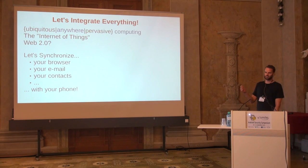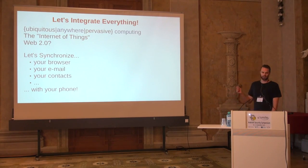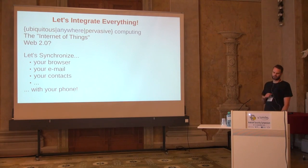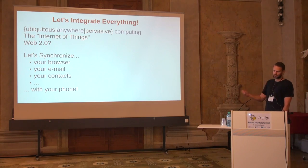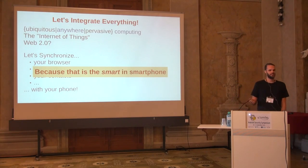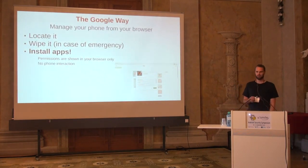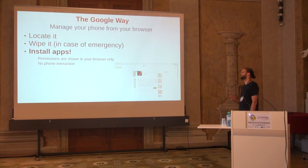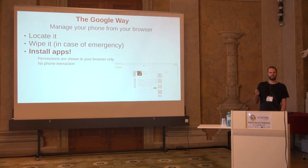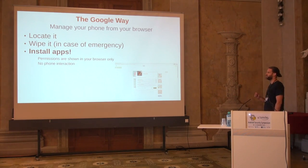So how did Google kill this? It all started with the desire to integrate everything — call it anywhere computing. The idea is to synchronize everything: your browser, email, contacts, with your phone, tablet, and multiple PCs. If you have an Android phone, you can manage it from your browser. You can locate it, wipe it if stolen, but also — and this is really interesting — you can install apps remotely.